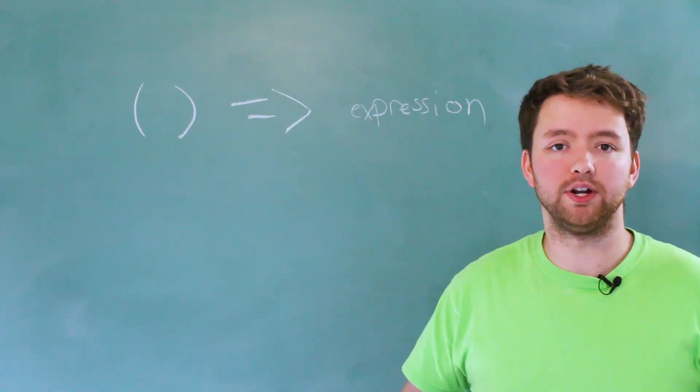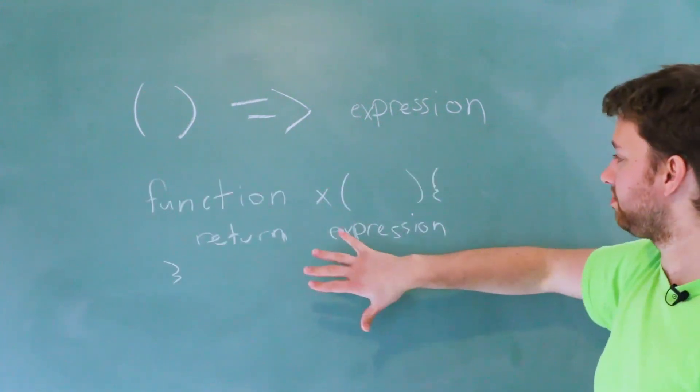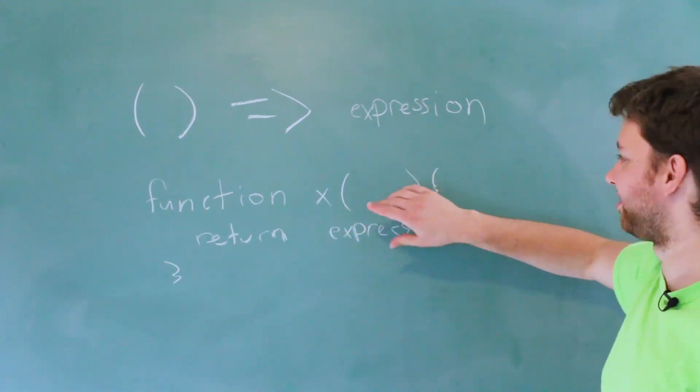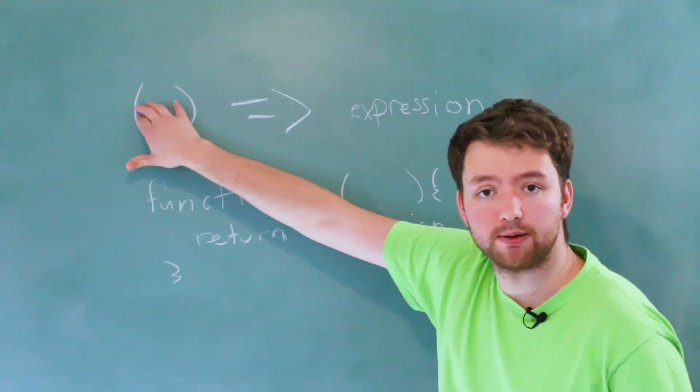So the equivalent for this in a function declaration would be something like this, and this is pretty close. Pretty much a lot of the stuff stays the same—the parentheses is where the parameters go.